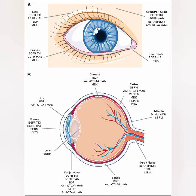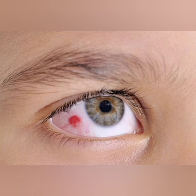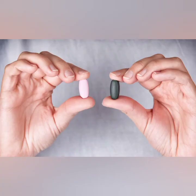Ocular toxicity includes conditions such as loss of vision, epiphora (uncontrollable flow of tears), and conjunctival hemorrhages — red patches visible over the white portion of the eye. These side effects are collectively described as ocular toxicity.